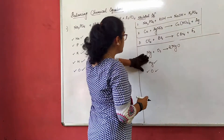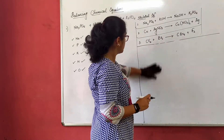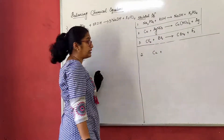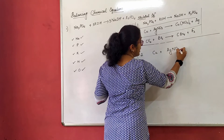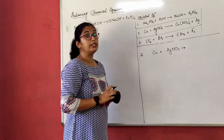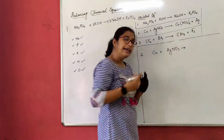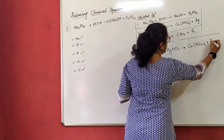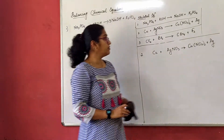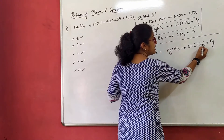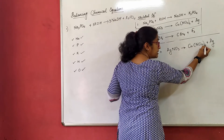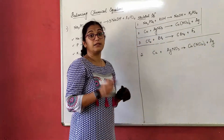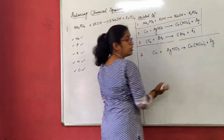This equation reads: copper plus AgNO₃ (silver nitrate) will give you Cu(NO₃)₂ (copper nitrate) plus silver. When we use a bracket and write Cu(NO₃)₂, the 2 outside means nitrogen is 2 atoms and oxygen is 3 times 2 equals 6 atoms. We multiply to the whole bracket. Nitrogen is 2, oxygen is 6 — that is how we read it.